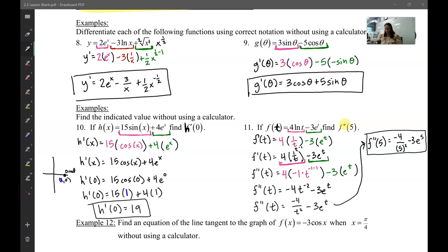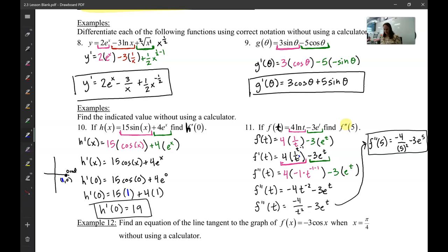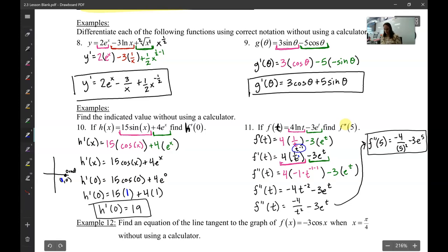So leave the 4 out. Take the derivative of ln of t. Take the negative 3 out. Take the derivative of e to the t. And I simplified it right here a little bit. Now 1 over t, I'm actually going to write as t to the negative 1. Because there's a secret 1 right here. And I can take it up into the numerator and make it negative. And then if I write it as t to the negative 1 this way, then I can use my exponent rule.